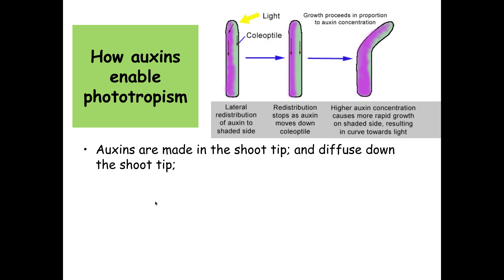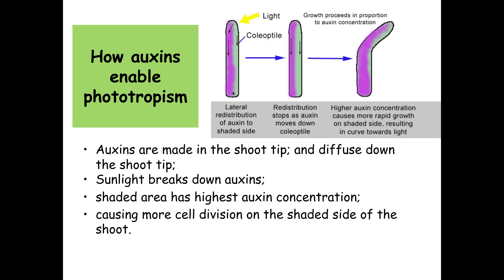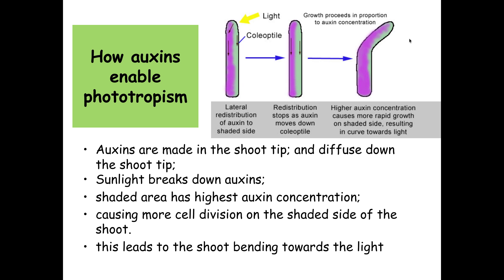This is directly from the mark scheme for how auxin causes positive phototropism. Auxins are made at the tip of the shoot and diffuse down the shoot tip. When light comes from one direction, it breaks down the auxin on the side of the shoot closest to the light. Therefore there is a higher concentration of auxin on the shaded side of the shoot, causing more mitosis to occur on that side, which causes the shoot to bend towards the light — positive phototropism.